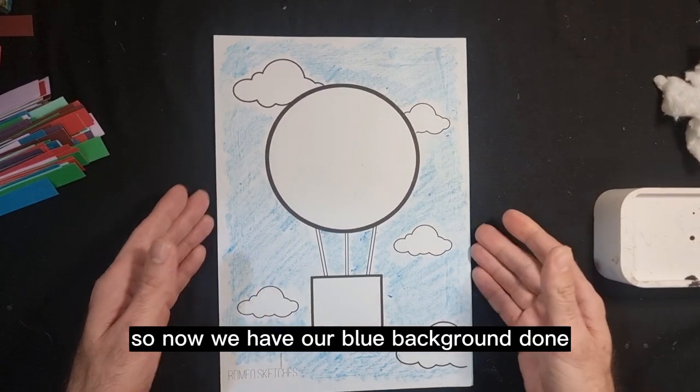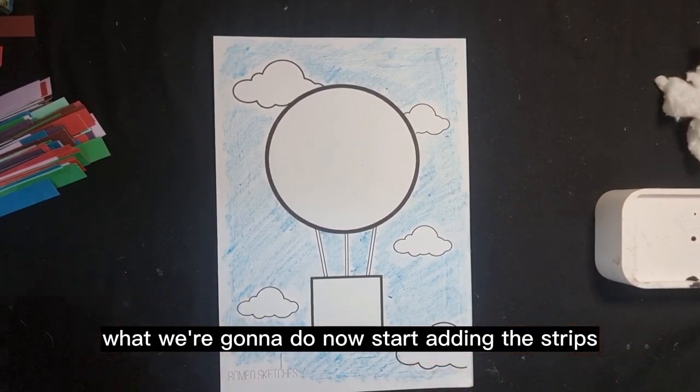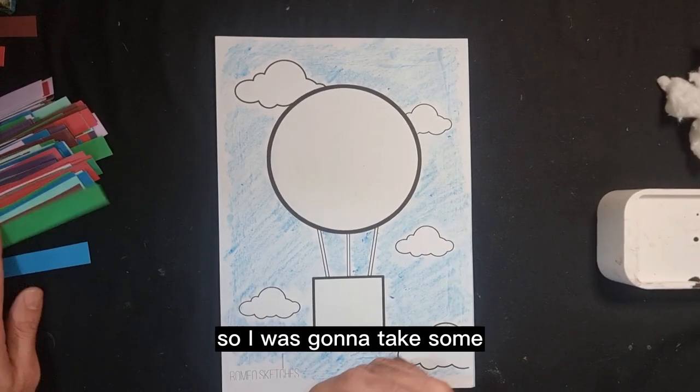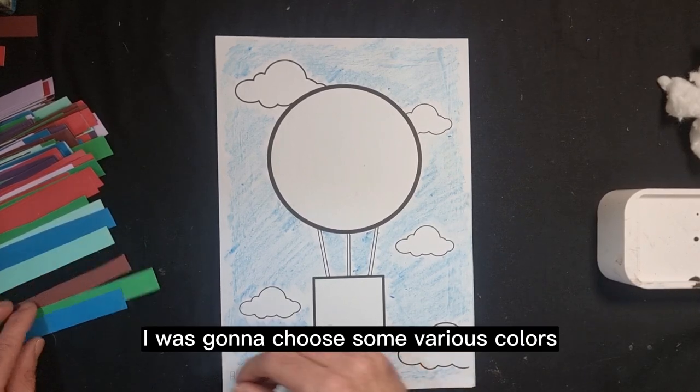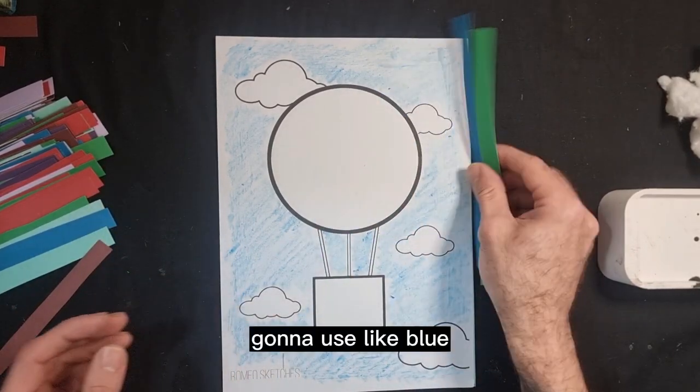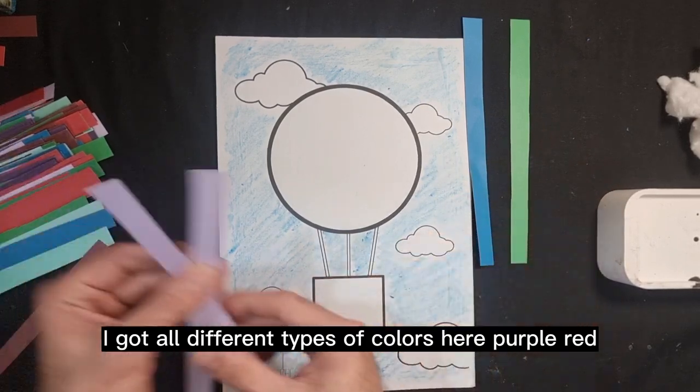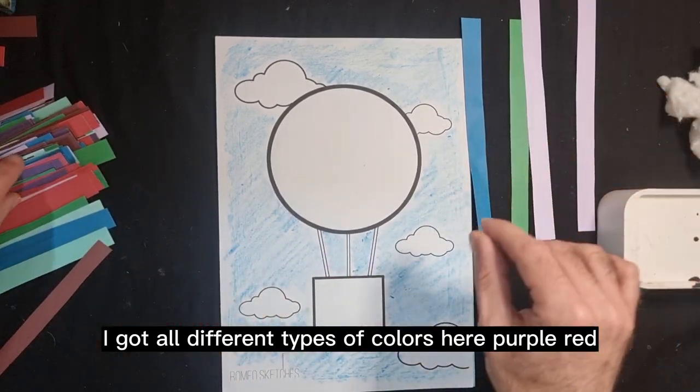What we're going to do now is start adding the strips. So I'm going to take some, I'm just going to choose some various colors. I'm going to use a little blue. I've got all different types of colors here, purple, red.